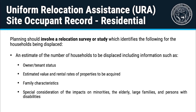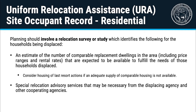Planning should involve a relocation survey or study which identifies the following for the households being displaced: an estimate of the number of households to be displaced, including information such as owner and tenant status, estimated value and rental rates of properties to be acquired, family characteristics, and special consideration of the impacts on minorities, the elderly, large families, and persons with disabilities. An estimate of the number of comparable replacement dwellings in the area, including price ranges and rental rates expected to be available to fulfill the needs of displaced households. When an adequate supply of comparable housing is not expected to be available, the agency should consider housing of last resort actions. Finally, special relocation advisory services that may be necessary from the displacing agency and other cooperating agencies.